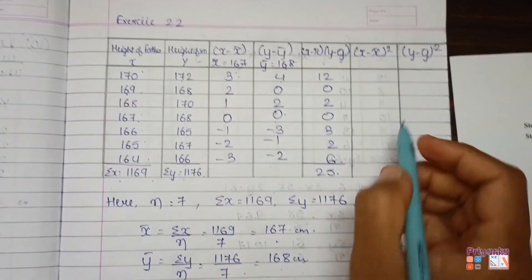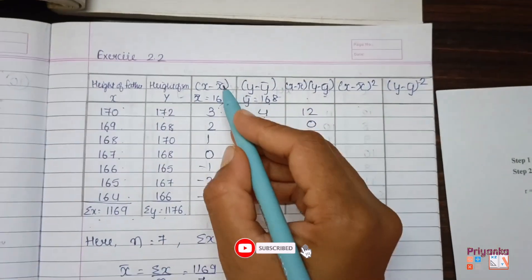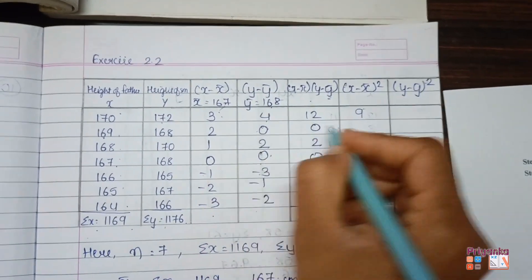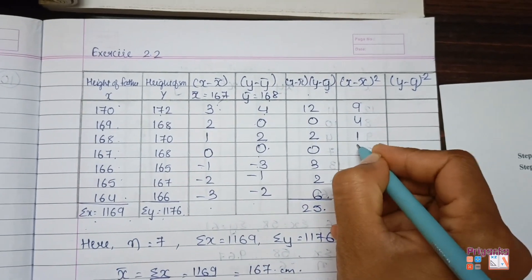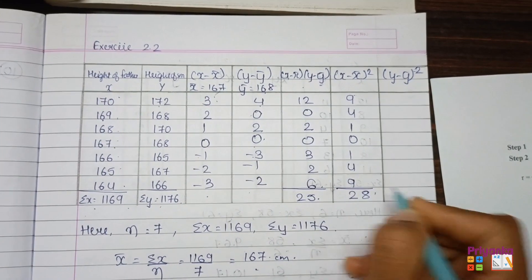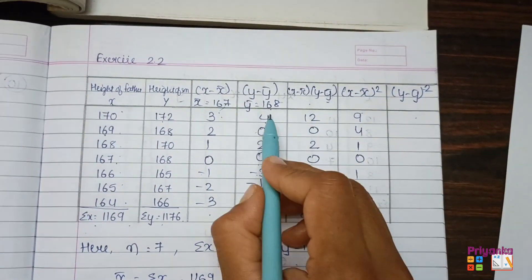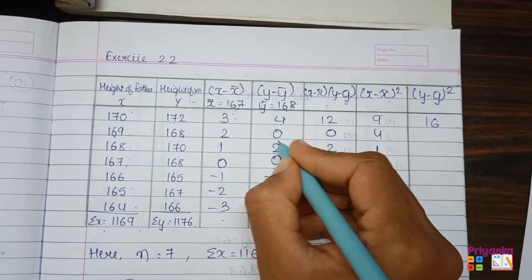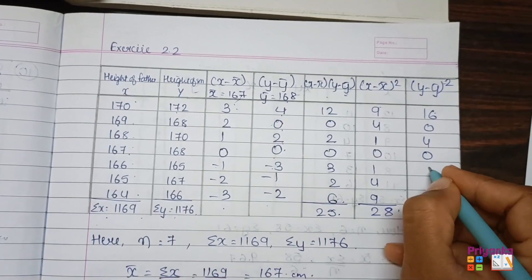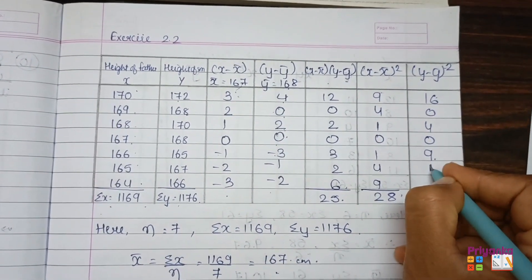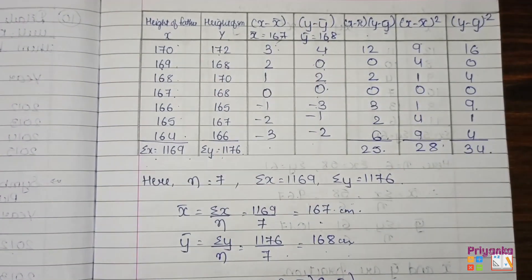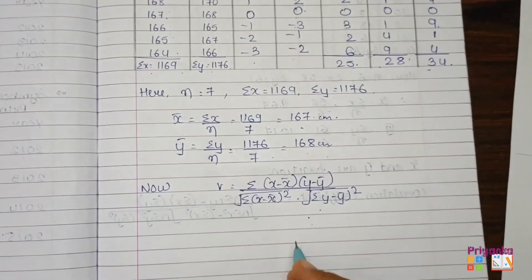Next, (x − x̄)² column: 3² = 9, 2² = 4, 1² = 1, 0, 1, 4, 9 — total Σ(x − x̄)² = 28. Then (y − ȳ)² column: 4² = 16, 0, 0, 0, 2² = 4, 0, 3² = 9 (minus × minus = plus), giving Σ(y − ȳ)² = 34. All needed values are now ready.